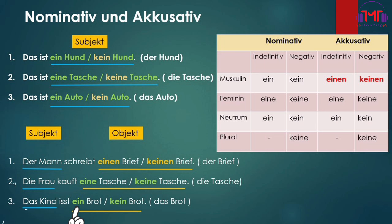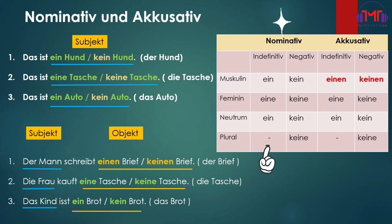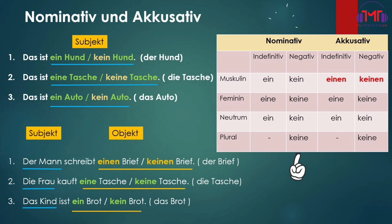The indefinite article here is 'ein.' The nominative: indefinite article is 'ein, ein, ein.' Negative: 'kein, kein, kain.'